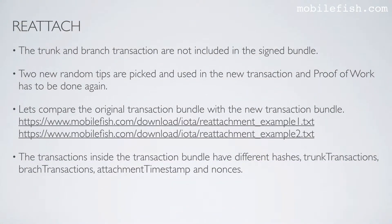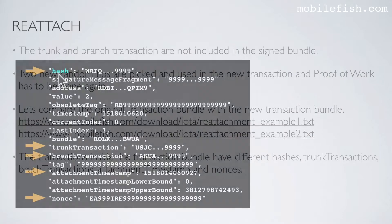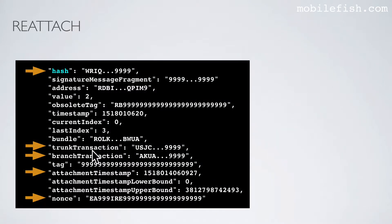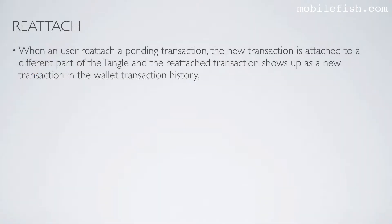So the transactions inside the transaction bundle have different hashes, trunk transactions, branch transactions, attachment timestamps and nonces. When a user reattaches a pending transaction, the new transaction is attached to a different part of the tangle and the reattached transaction shows up as a new transaction in the wallet transaction history.